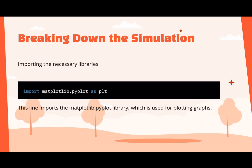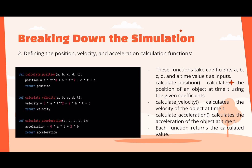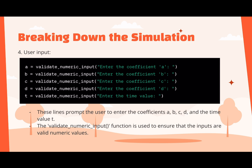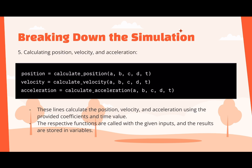Let's break down the simulation. The first part imports the necessary library for the user to visualize the data and for the code to plot the graphs. The next part defines functions for how to calculate position, velocity, and acceleration. The following part validates numeric inputs — if a non-numeric value is entered, it will print 'invalid input, please enter a numeric value.' The next part allows the user to enter the coefficients within the mathematical function they want to solve, as well as the time value. This part then calculates position, velocity, and acceleration.